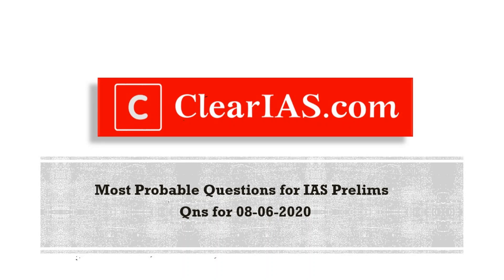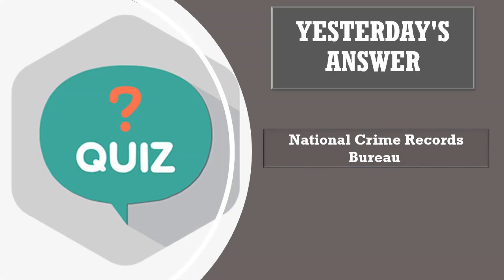Hi guys, welcome to today's session. Thank you all for your responses on yesterday's quiz question. The question was: the publications 'Crime in India', 'Accidental Deaths and Suicides in India', 'Prison Statistics India', and 'Fingerprint in India' are published by which organization? The answer is the National Crime Records Bureau (NCRB). So now let's start today's session.